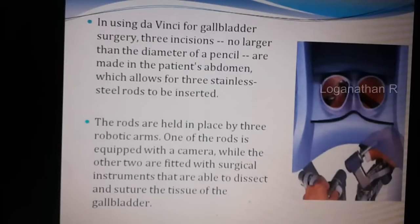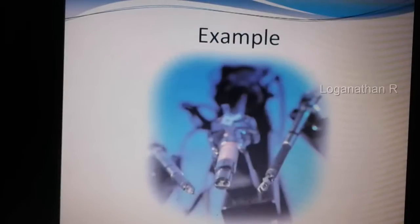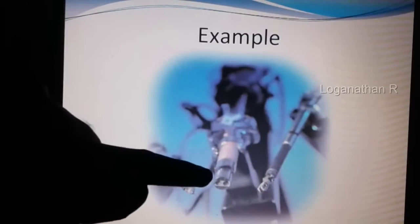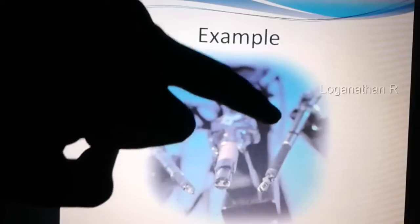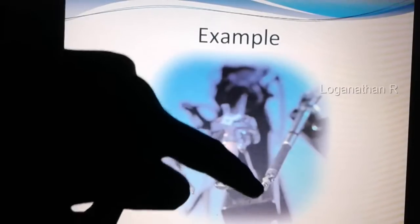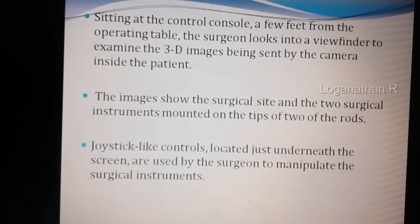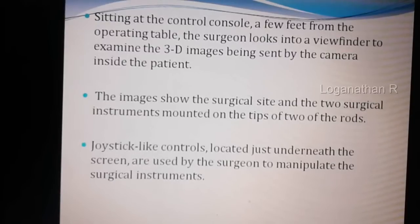There are three stainless steel rods placed inside the patient's body, each of pencil diameter size. These rods have three robotic arms: two are for instruments and one is for fixing the camera. One rod is fixed with the two cameras, and the others are fixed with the instruments. Through these pencil-type holes, we can insert medicine inside the body to perform specific operations.